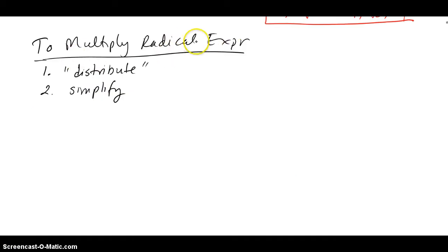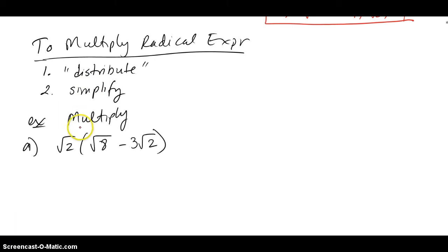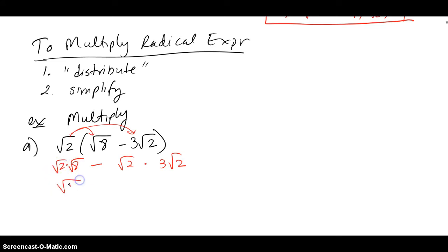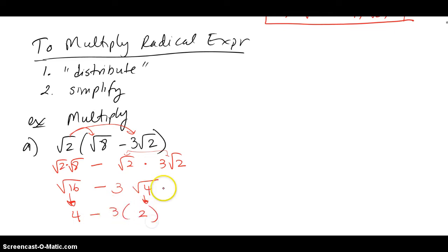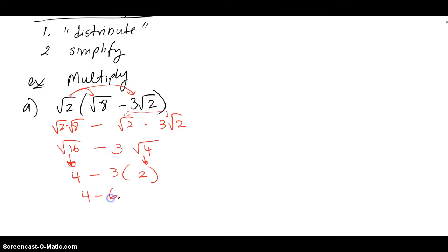To multiply radical expressions, we distribute like we do with polynomials, then simplify. For part A, I have a monomial outside and a binomial inside: √2 times √8 minus √2 times 3√2. The first pair merges to give √16, which pops out a 4. The second pair gives 3√4, which pops out a 6. So I have 4 minus 6, which is negative 2.